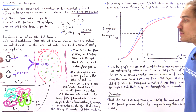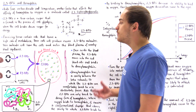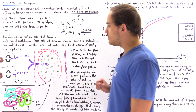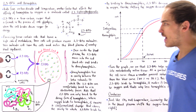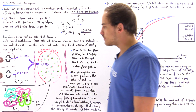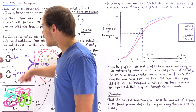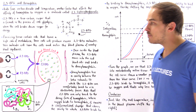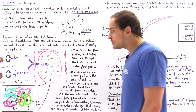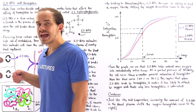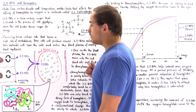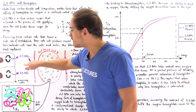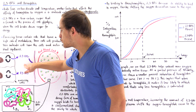Once the 2,3-BPG molecules are inside the capillaries, they enter the red blood cells where we have the hemoglobin molecule. These are the exercising cells with a relatively high rate of metabolism found within our tissue. When we produce an excess of 2,3-BPG, some of these molecules leave the cell and enter the matrix.